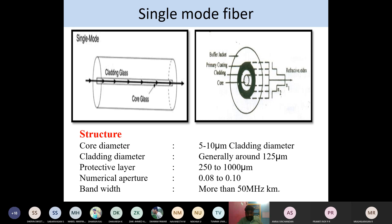The parameters for single mode fiber: core diameter 5 to 10 micrometers, cladding diameter 125 micrometers, protective layer 250 to 1000 micrometers, numerical aperture 0.08 to 0.10, and bandwidth more than 50 MHz·km.